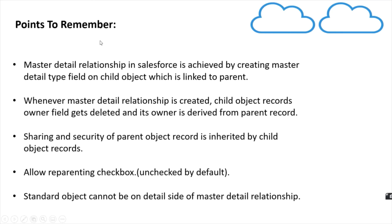There are several points to remember while creating a master detail relationship. First, it is achieved by creating a master detail type field on the child object which is linked to the parent object. Whenever a master detail relationship is created, the child object record's owner field gets deleted and its owner is derived from the parent record — whoever is the owner of the parent record, that same owner gets assigned to the child record. Child object record sharing and security of the parent object is also inherited by child object records.